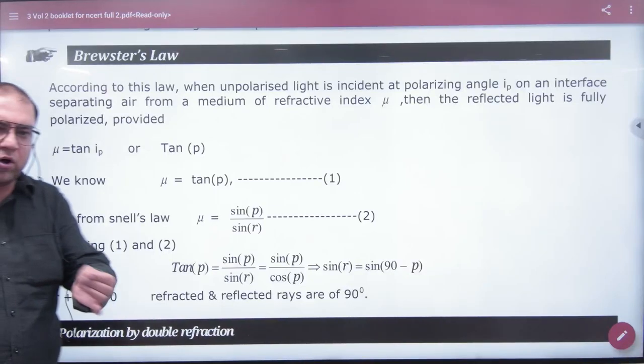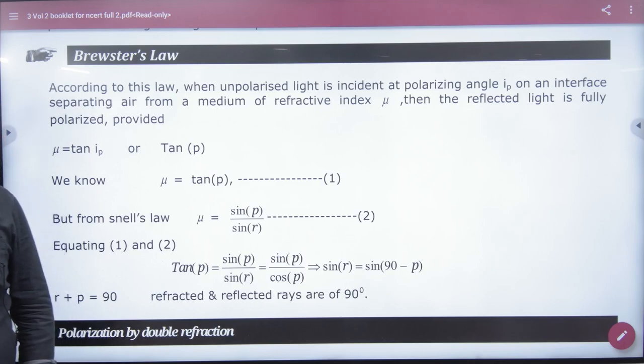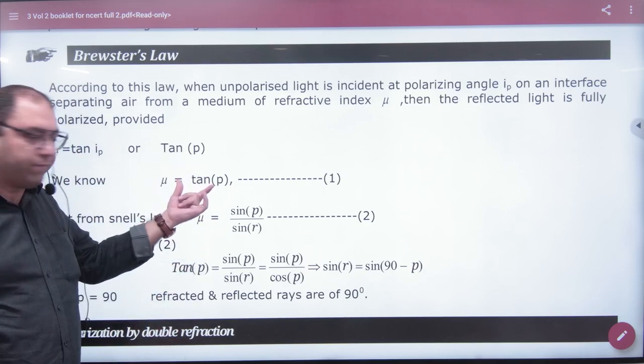That is Brewster's law. This law is simply one thing that you have to put light on the angle of incidence that reflected light is completely polarized. This formula is written.